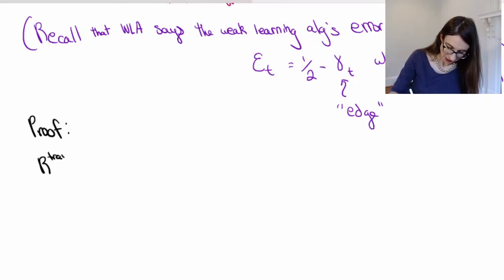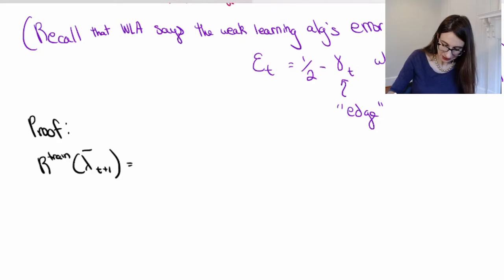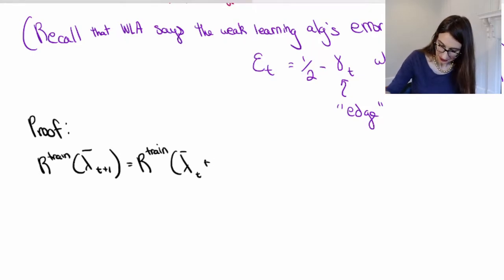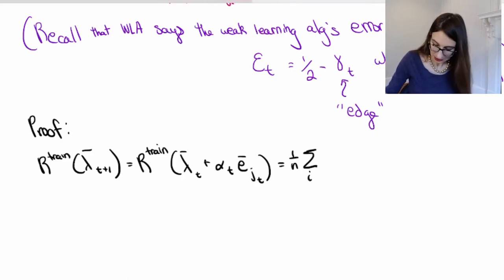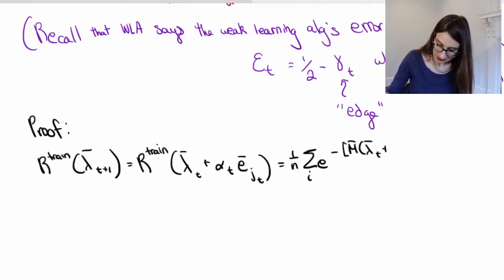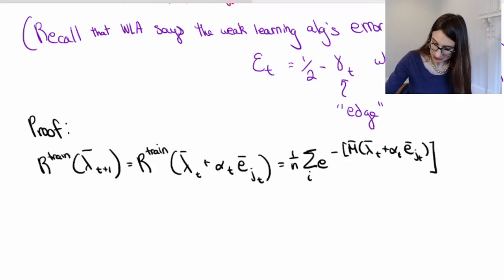I have my exponential loss here — these are all vectors. So this is from the recursion: Adaboost adds alpha_t to weak classifier j_t at each step. Let's write down the exponential loss: (1/n) sum over i of e to the negative m * lambda_i. But this is lambda plus alpha_t * e_{j_t}.